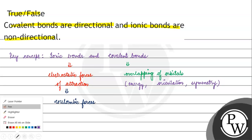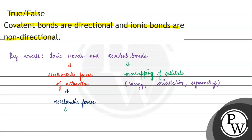If we talk about ionic bonds, the Coulombic forces are equal in all directions. This is why the ions are arranged in a lattice, and ionic bonds are non-directional. Each of these forces are non-directional.